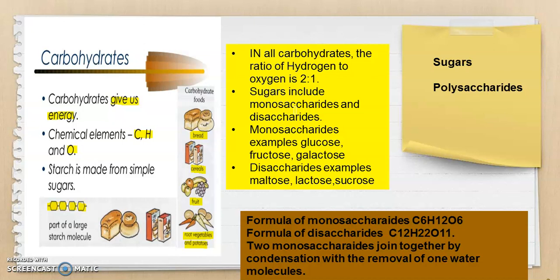The first type of carbohydrate is sugars, which include monosaccharides and disaccharides. 'Mono' means single and 'saccharide' means sugar, so single sugar units are monosaccharides and double sugar units are disaccharides. Examples of monosaccharides in your syllabus are glucose, fructose, and galactose. Disaccharide examples are maltose, lactose, and sucrose. Interestingly, they all end in '-ose,' which represents sugars.